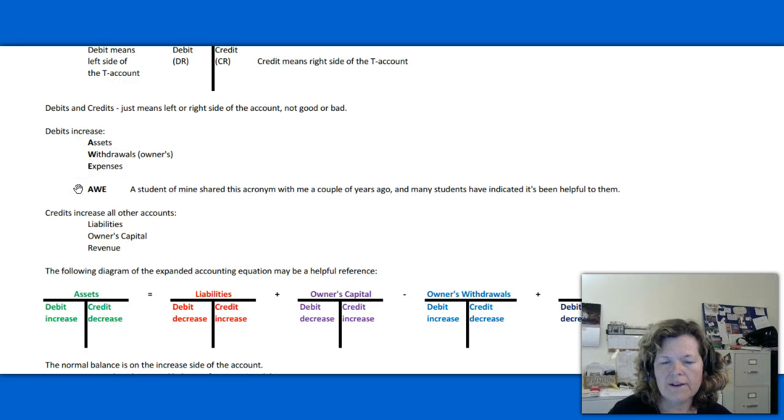Now, in order to use this, you have to have a good working knowledge of what types of accounts are assets, withdrawals, expenses. And that will come with practicing the exercises and problems so that you know those without even having to think twice about them. So we know what accounts debits increase. So credits increase all other accounts, which are liabilities, owner's capital, and revenue accounts.